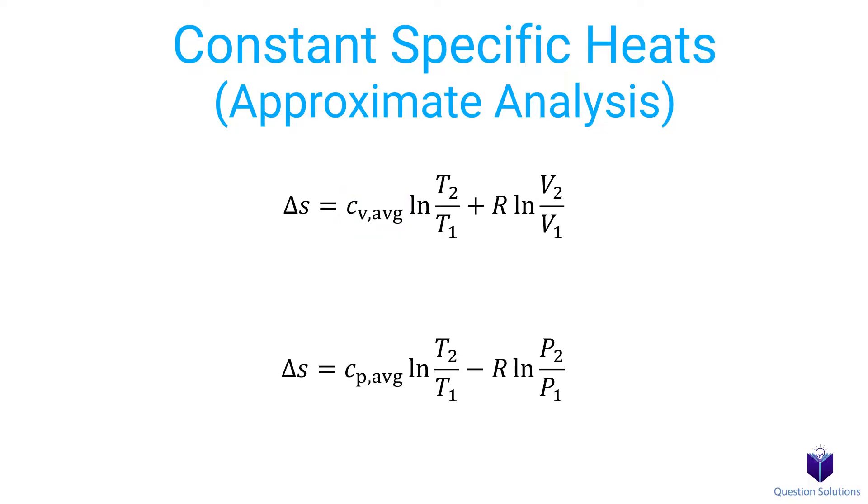The second equation can be used when we have temperature and pressure. We use the average specific heat for constant pressure.